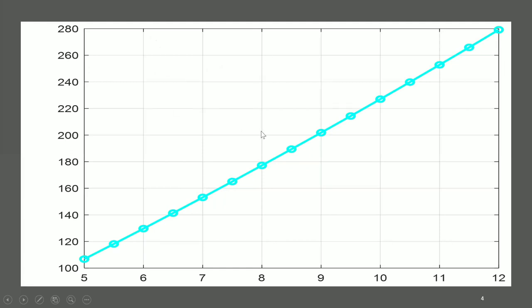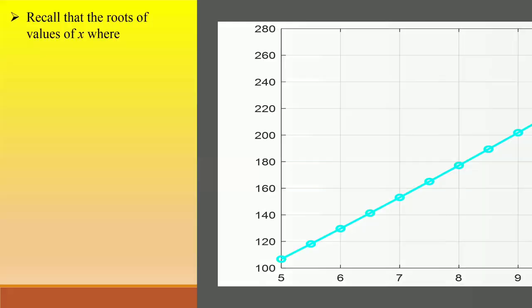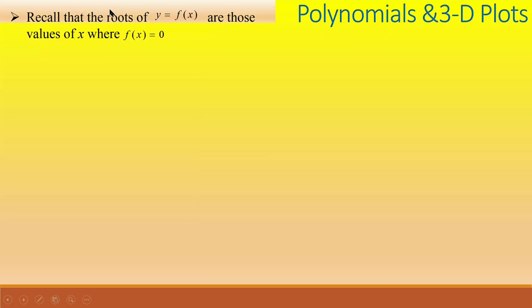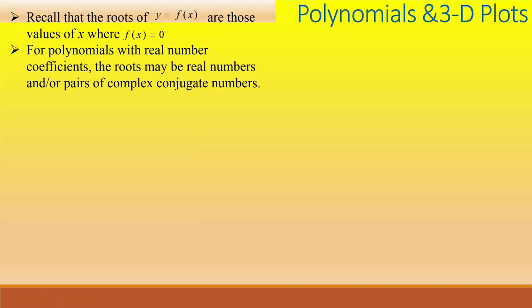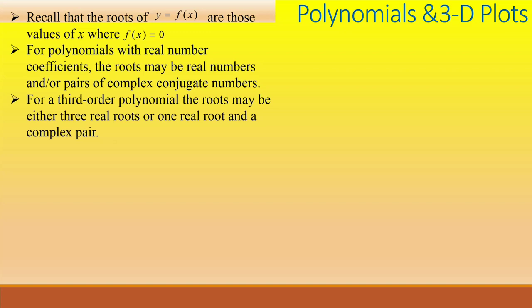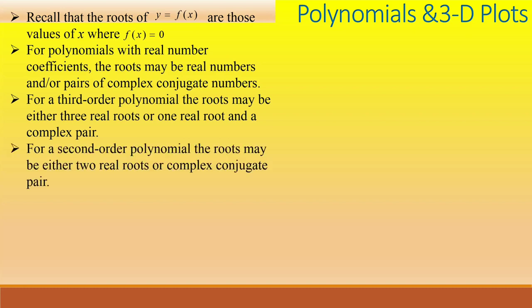We are going to a live script to cover some aspects of MATLAB. Recall that the roots of a polynomial y = f(x) are those values of x where f(x) = 0 or is the equilibrium point. For quadratic polynomials with real number coefficients, the roots may be real numbers and/or pairs of complex conjugate numbers. For a third order polynomial, the roots may be either three real roots or one real root and a complex pair. For a second order polynomial, the roots may be either two real roots or complex conjugate pair. Hand calculation of polynomial roots becomes impractical as the order increases, hence we often turn to a numerical solution.